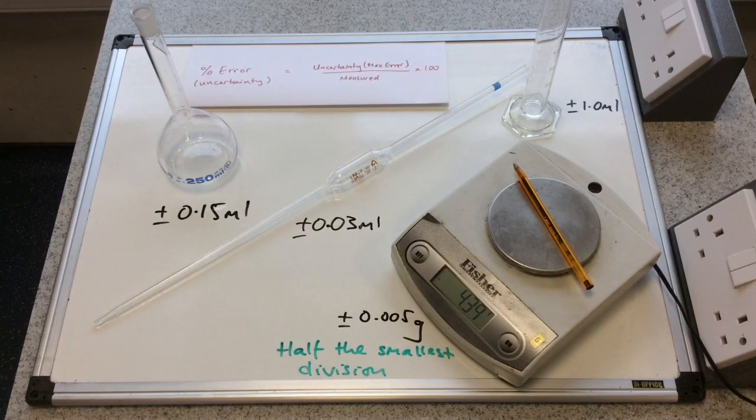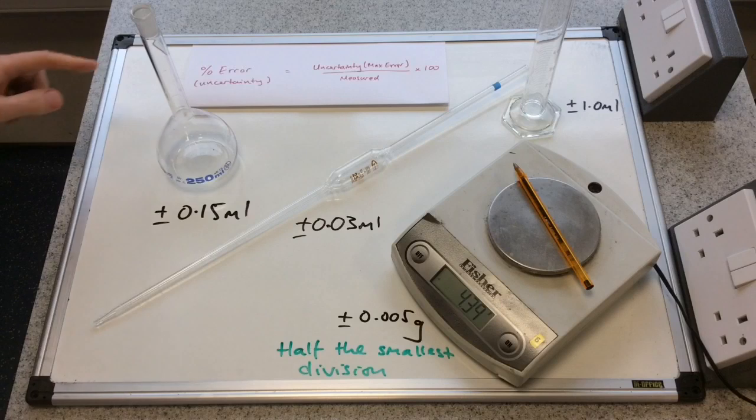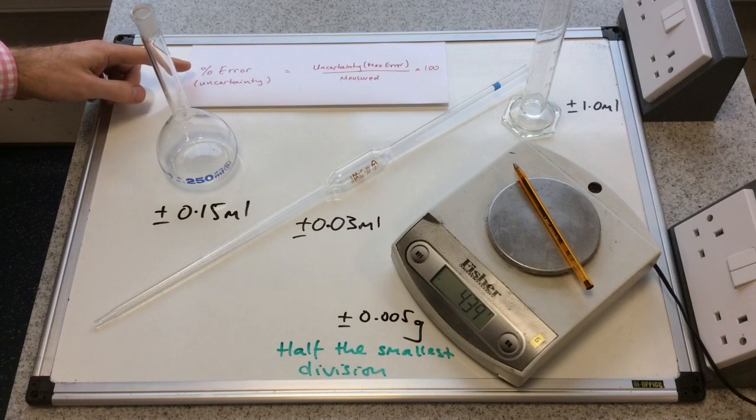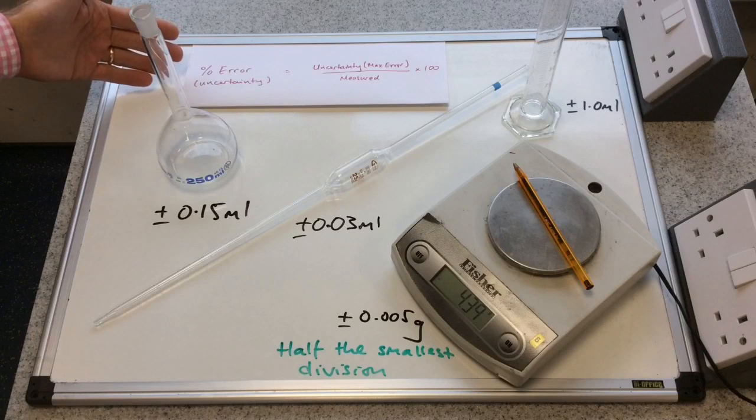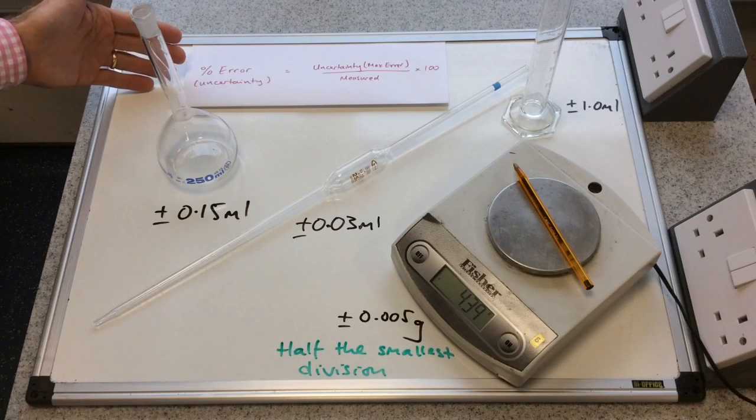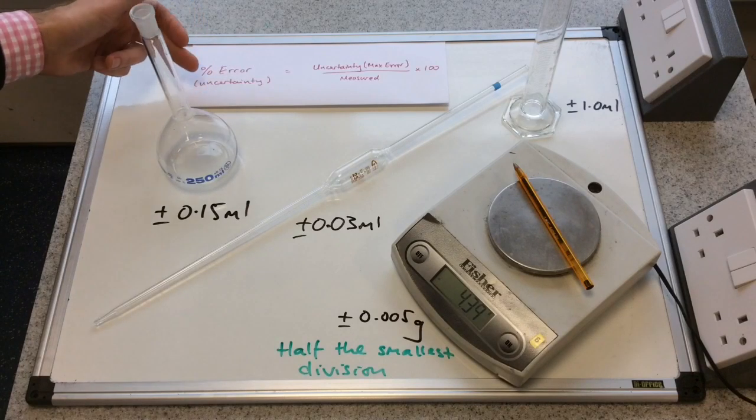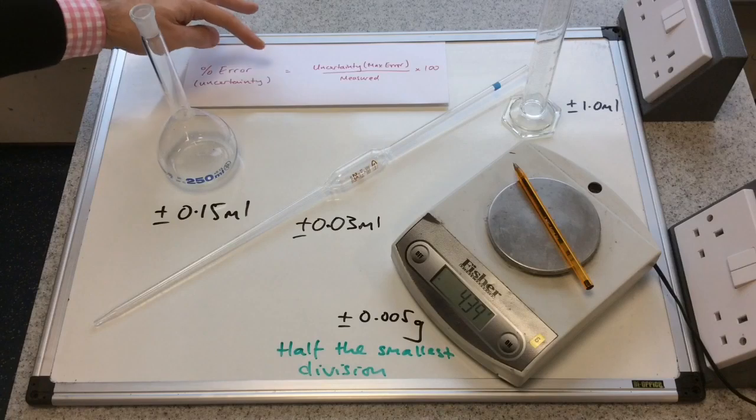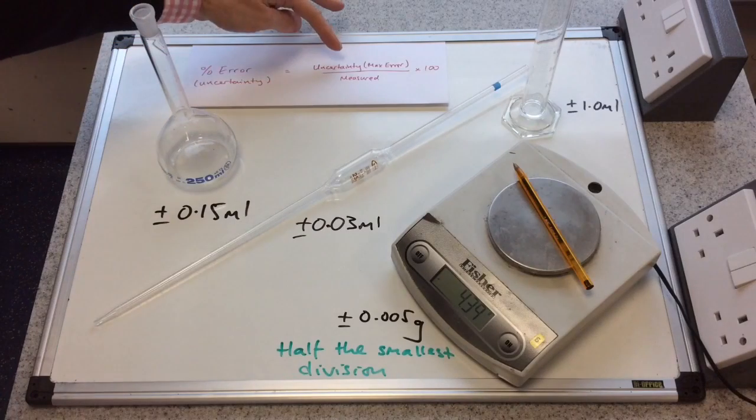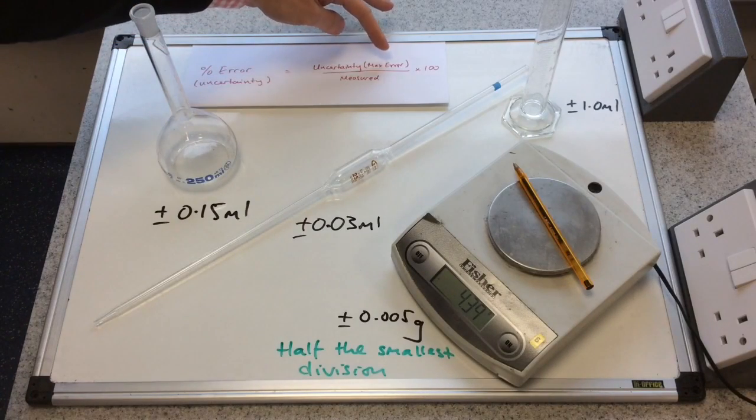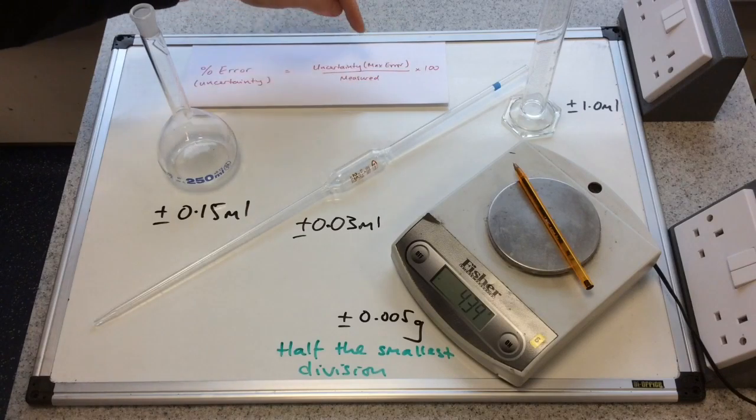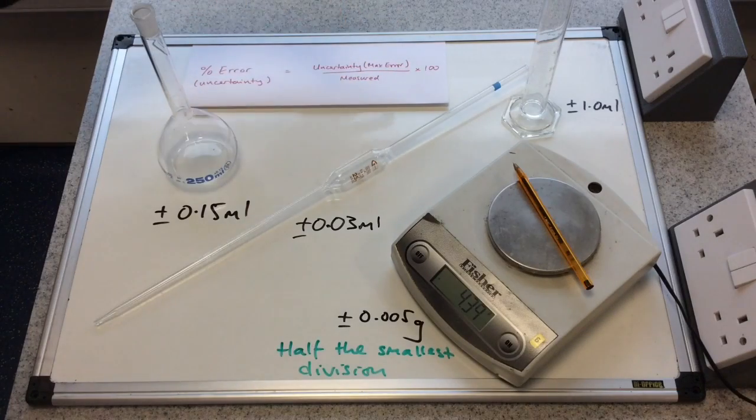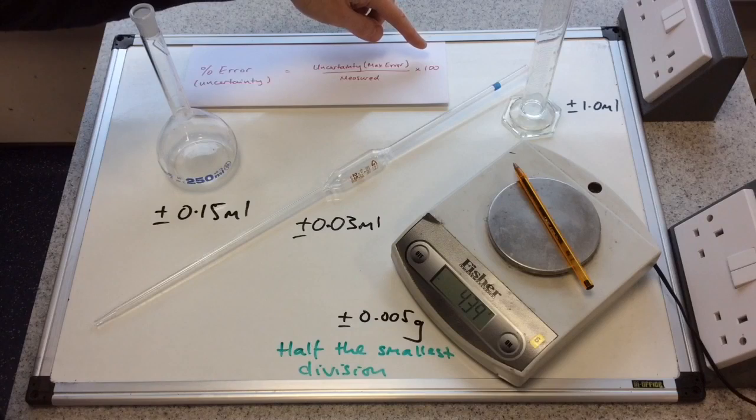So if we look at the way we calculate the percentage error or the percentage uncertainty now, you can see I've written up a formula. Hopefully you can see it OK. So percentage error or percentage uncertainty is equal to the uncertainty or the maximum error divided by the amount that you measure with the equipment multiplied by 100.